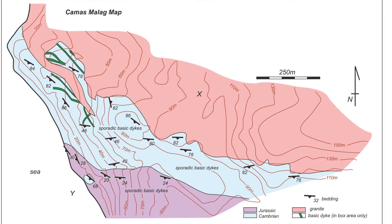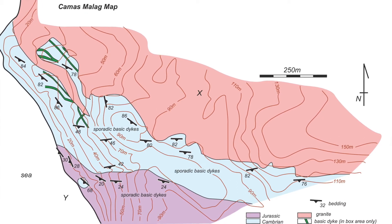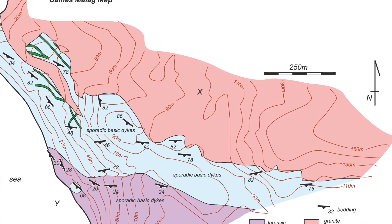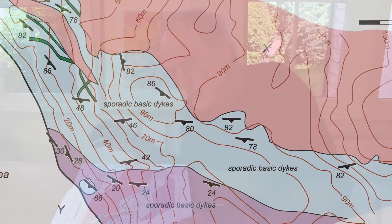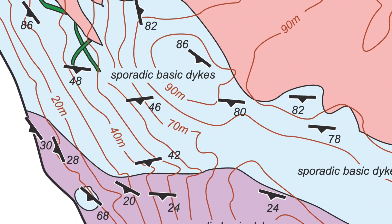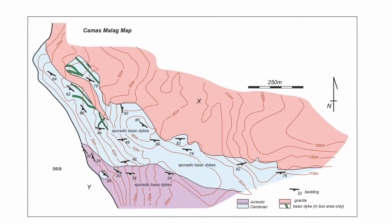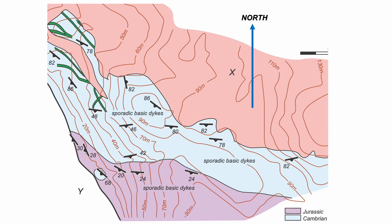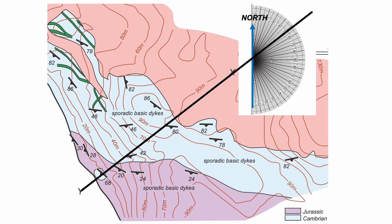On the map we're going to draw our cross-section between points X and Y. The cross-section will go through three distinct geological units: a pink granite unit which doesn't have bedding, and two sedimentary units which do have bedding readings. The first thing we need to do is find the orientation of the cross-section line, which is a vertical plane — we need to know its trend. Measuring its bearing relative to north, our cross-section trends 052; that's the strike of the vertical plane of the cross-section.